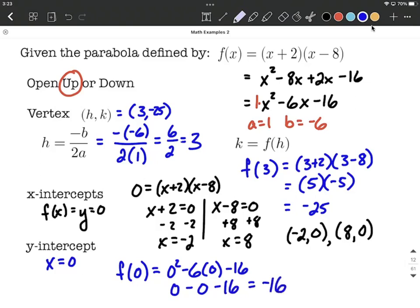Or as an ordered pair, we can write that as an x value of 0 and a y value of negative 16. I hope this helps out as you're working through understanding parabolas and identifying their vertex, x-intercepts, y-intercepts, and whether they open up or down. Good luck.